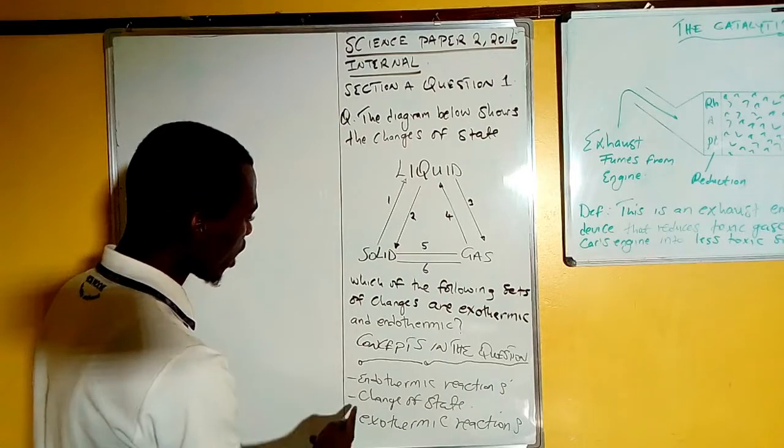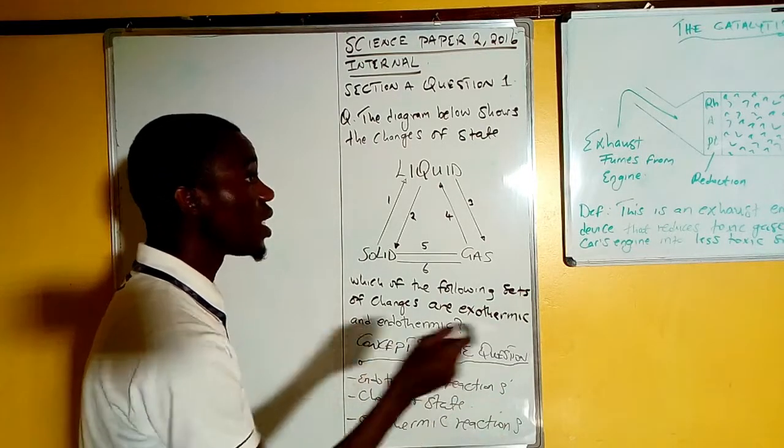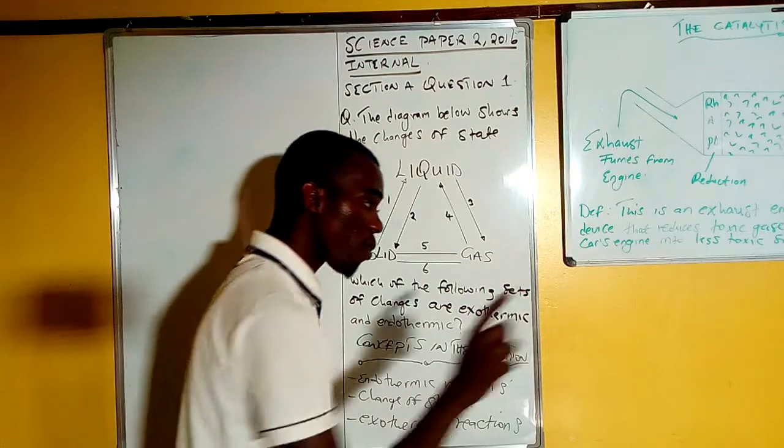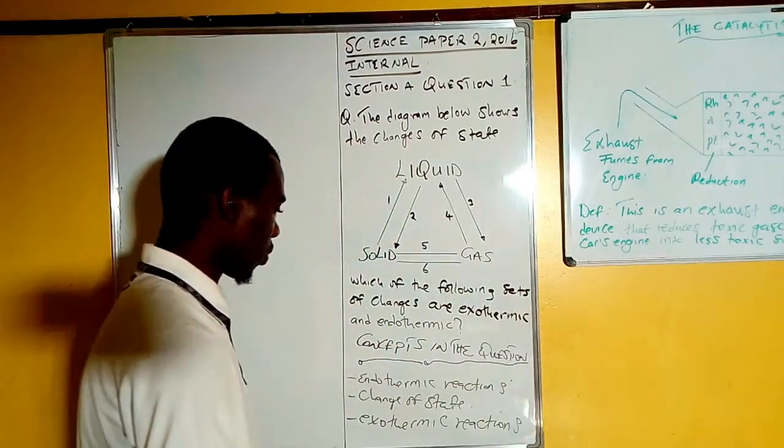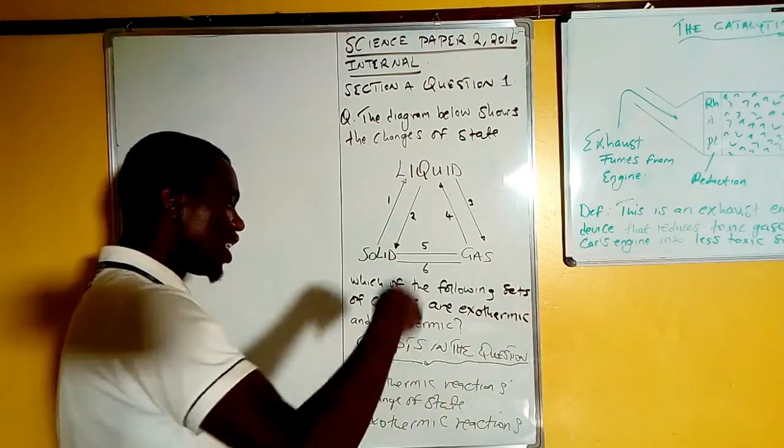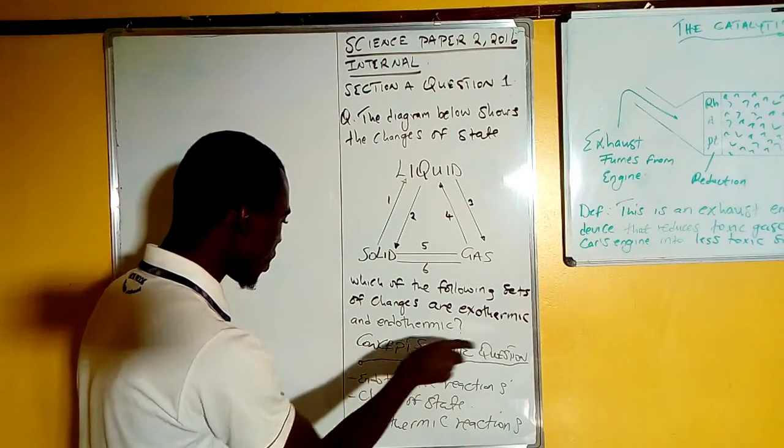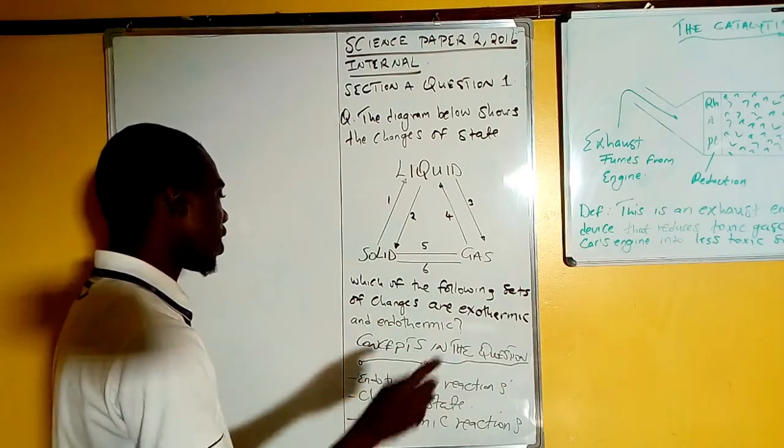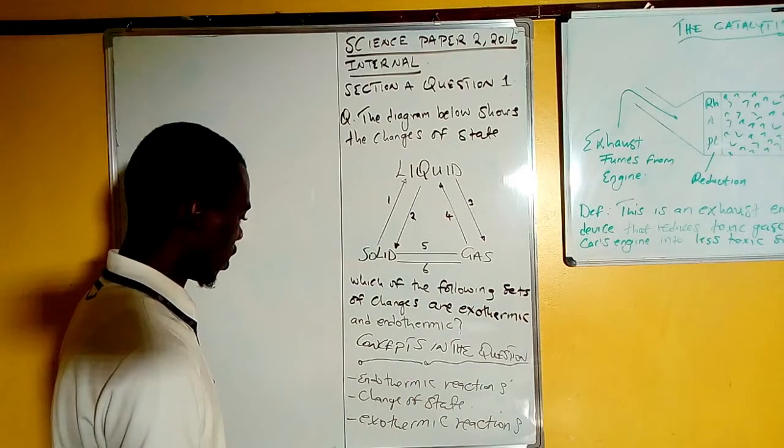Now just for a reminder: endothermic reactions are reactions in which heat is taken from the environment into the system. So endo means input. Endothermic reactions are reactions in which heat is taken from the surrounding and into the reaction system.